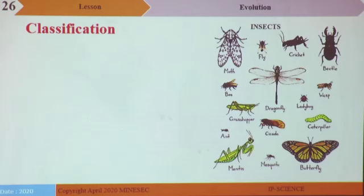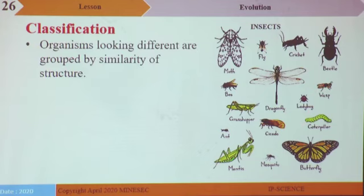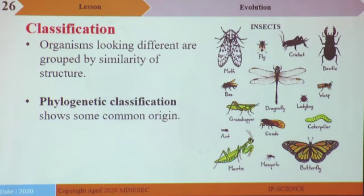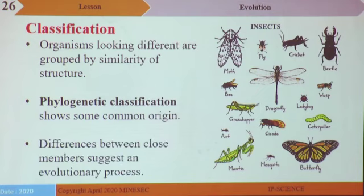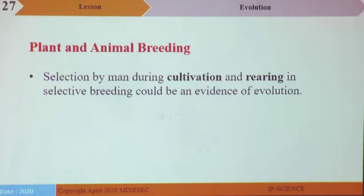Classification. All the organisms on the slide are collectively called insects. Humans by natural instinct know that even though organisms look different, they can be grouped and classified as insects. All the insects have three pairs of jointed legs, one or two pairs of wings, a pair of antennae, and a body divided into three segments — showing descent from a common ancestor. This type of classification is called phylogenetic classification. Plant and animal breeding through selective breeding could also be evidence of evolution, as pre-existing species had different characteristics from present species.